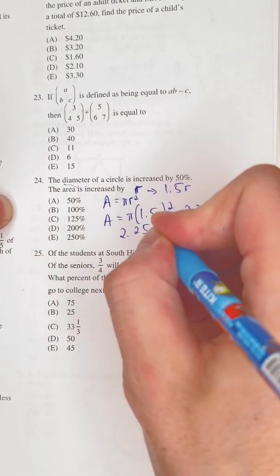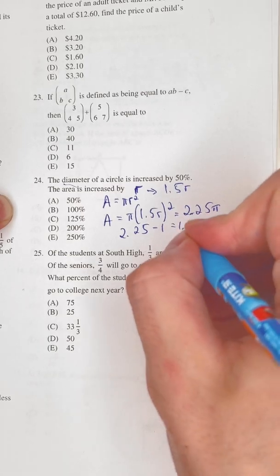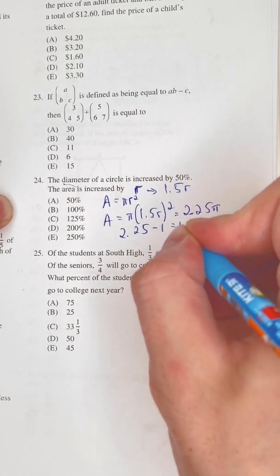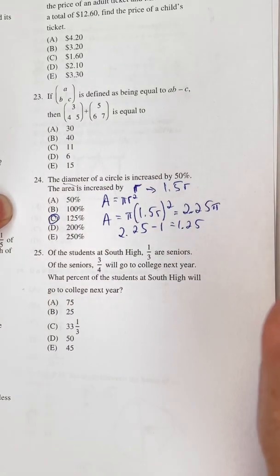Otherwise, that would look like 2.25 minus 1, which is 1.25. And if we convert 1.25 to percent, then we get 125 percent.